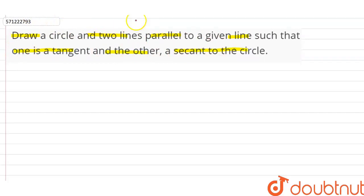First of all, let's suppose we draw a circle. The center of this circle is O and we have a parallel line. Let's suppose this is line AB. We have to draw two lines parallel to the given line AB such that one is a tangent and another is a secant to the circle.